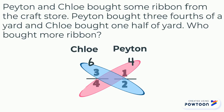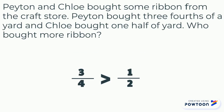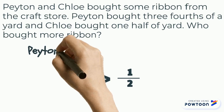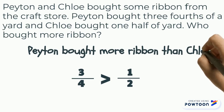Now that I have cross-multiplied, I can clearly see that six is greater than four. So, three-fourths is greater than one-half. The alligator mouth will face towards the six. We can read this comparison sentence as three-fourths is greater than one-half. After cross-multiplying, we can see that Peyton bought more ribbon than Chloe.